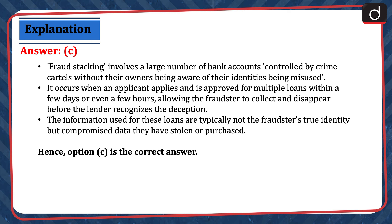Fraud stacking involves a large number of bank accounts controlled by crime cartels without their owners being aware of their identities being misused. It occurs when an applicant applies and is approved for multiple loans within a few days or even hours, allowing the fraudster to collect and disappear before the lender recognizes the deception. The information used is typically not the fraudster's true identity but compromised data they have stolen or purchased. Hence, option C is the correct answer.